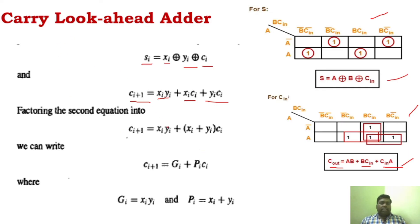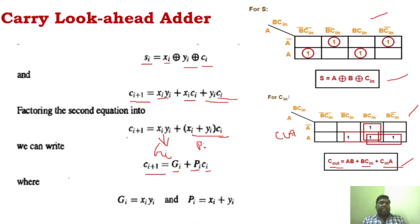From the carry-out equation, we can take Ci common, rewriting it as: Ci+1 = (Xi · Yi) + (Xi + Yi) · Ci. We define Gi = Xi · Yi as the generate function, and Pi = Xi + Yi as the propagate function. So the expression becomes: Ci+1 = Gi + Pi · Ci.